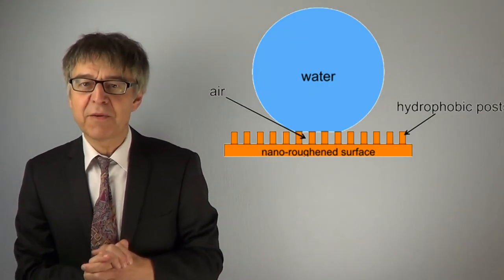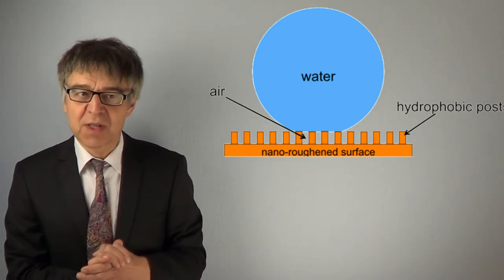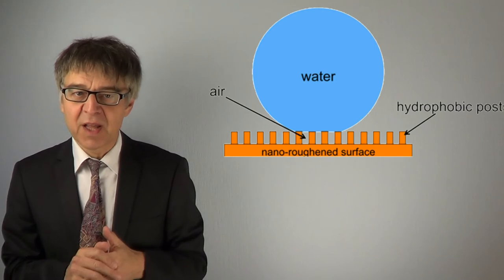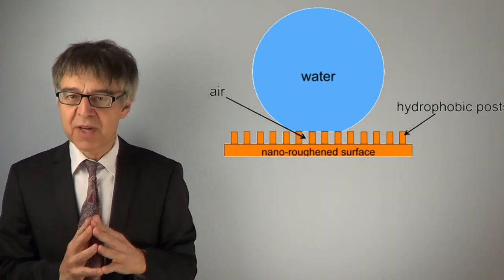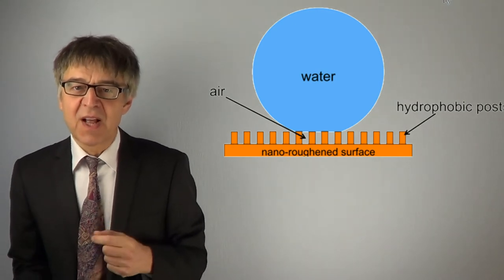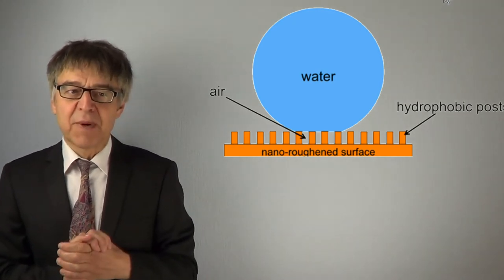A super hydrophobic surface must satisfy two conditions. It must be water repellent, hydrophobic, and it must be microscopically rough. A water droplet rests on such a surface like a sky on a bed of nails.